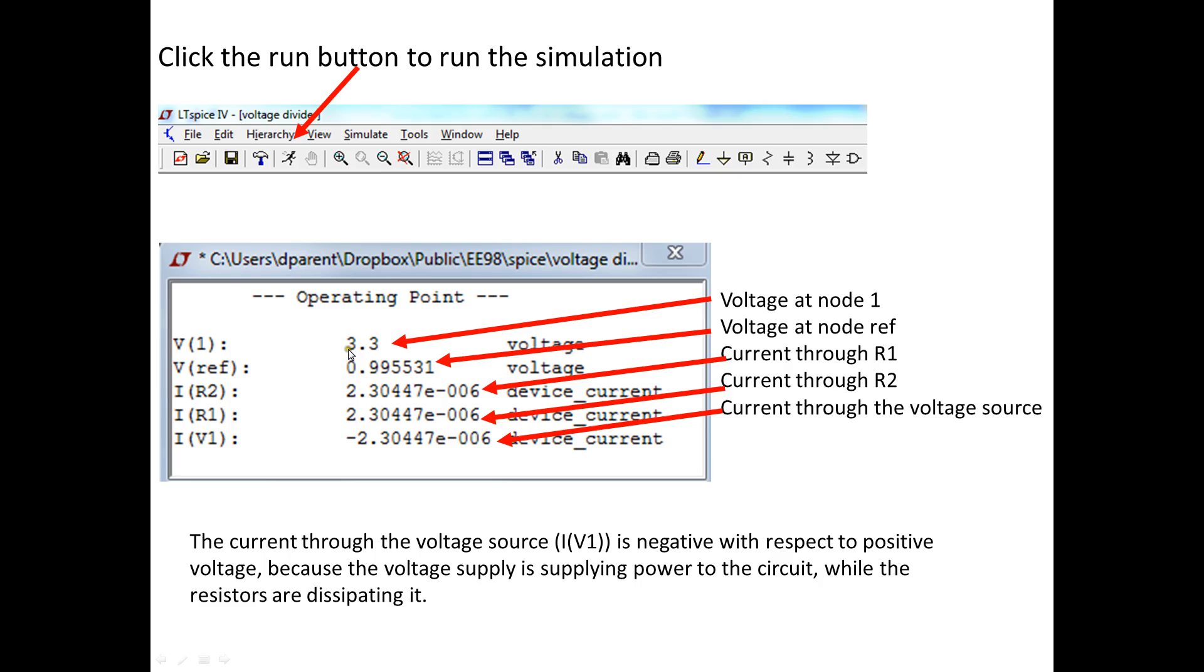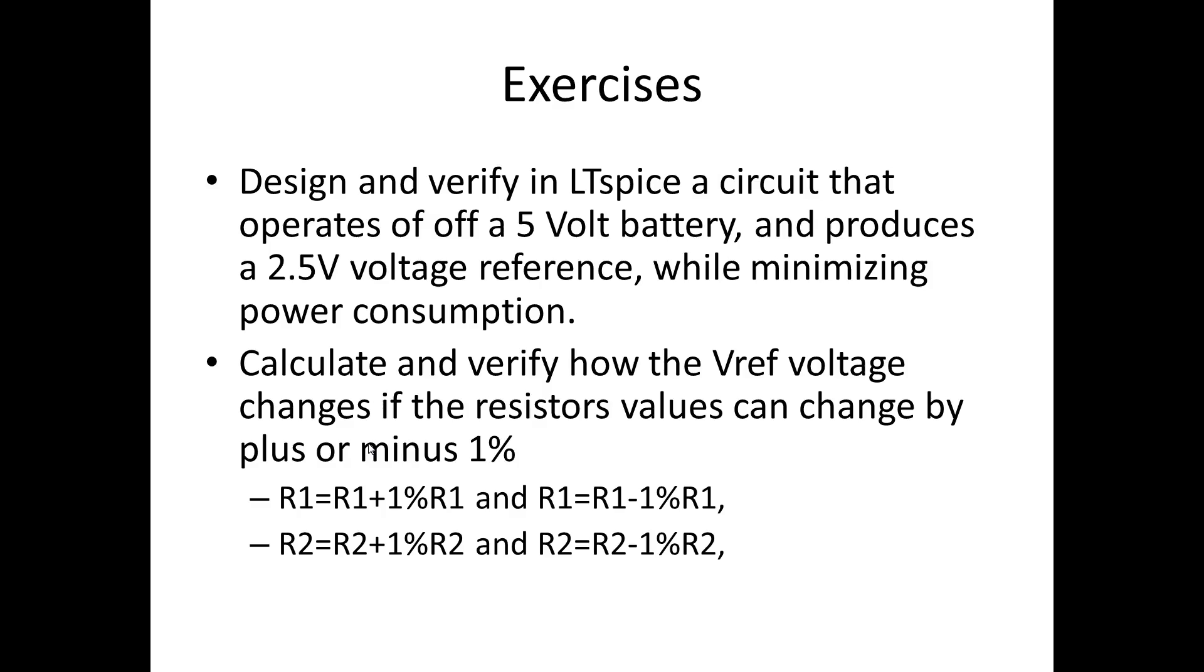With these voltages, 3.3 volts is the voltage at node 1, which is the power supply that we set up. 0.995531 volts is what we calculated V reference should be. Notice the currents are equal, and the current through the voltage supply is negative because it's giving power to the circuit rather than absorbing. Now you can do some design work on your own using LT spice.